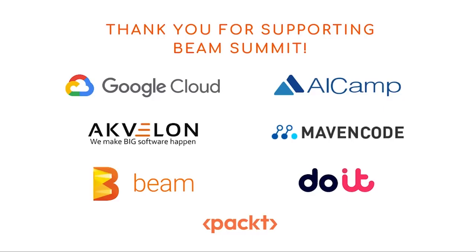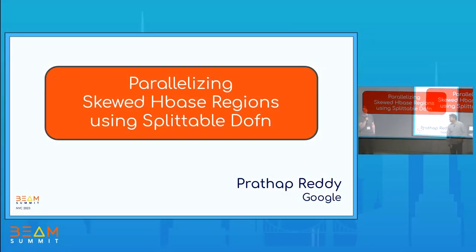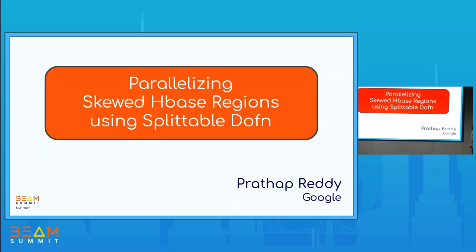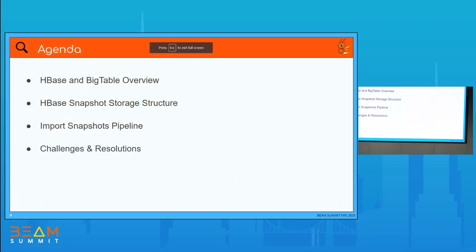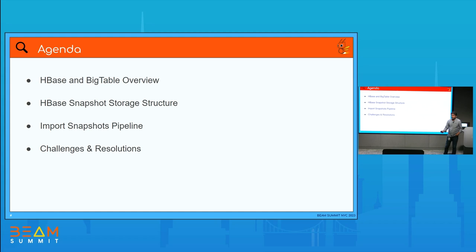We have an exciting talk. Prathap is here to talk about parallelizing skewed HBase regions using splittable DoFns. Today we are going to talk about how we parallelize skewed HBase regions using a technique called splittable DoFn. The agenda looks like this: we'll briefly talk about HBase and Bigtable overview, the HBase snapshot storage structure, how we import the snapshots, a pipeline that we write to import the snapshots, and what challenges we faced in the initial version, and how we overcame them with a better solution.